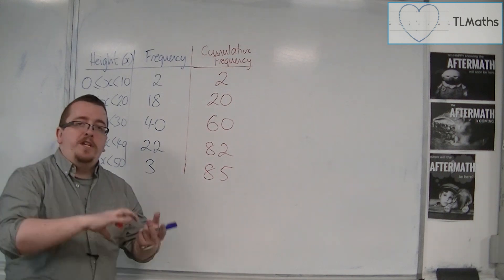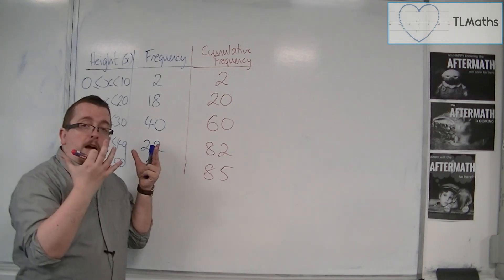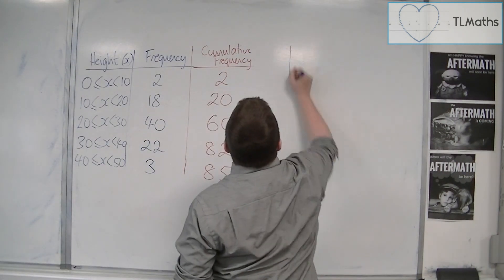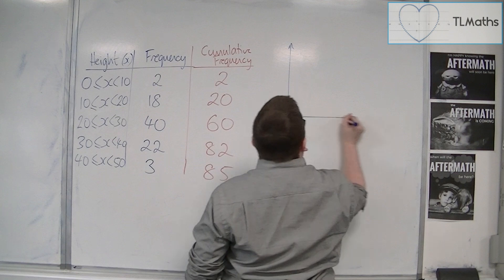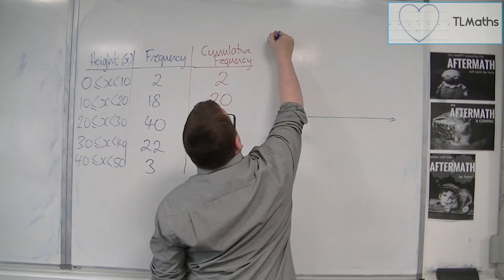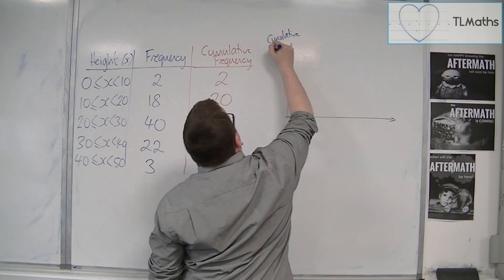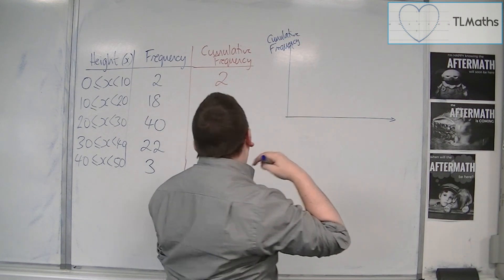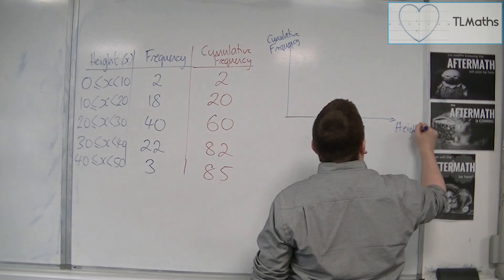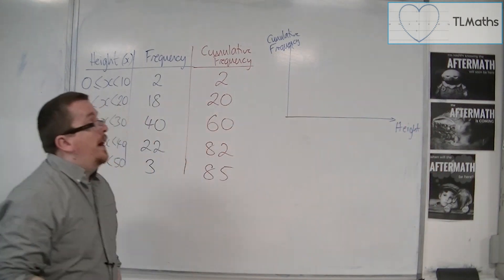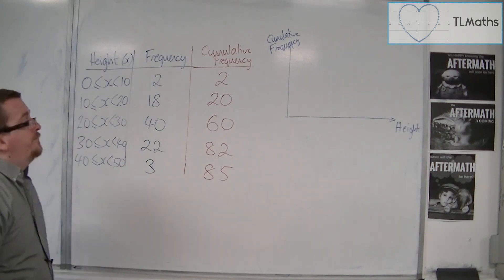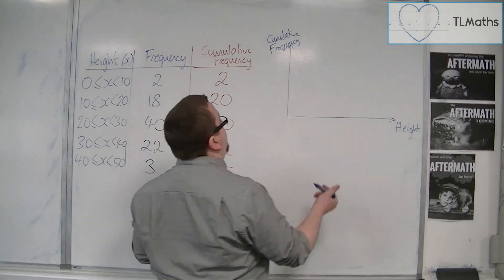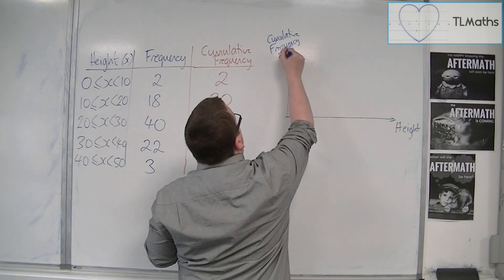What would happen then is that you would usually be asked to draw a graph of this data. You'd have to plot it. You would have cumulative frequency as the vertical axis, and you would have the heights down on the bottom axis. Cumulative frequency would go up to 85.